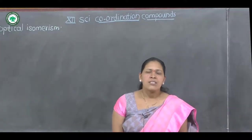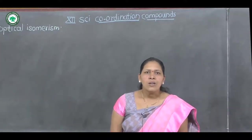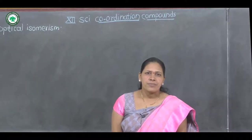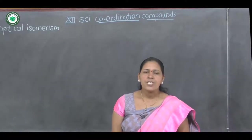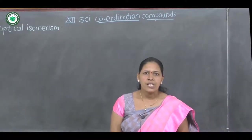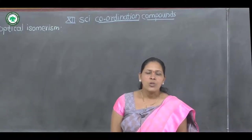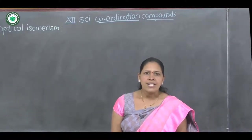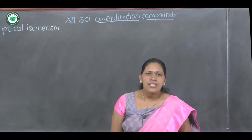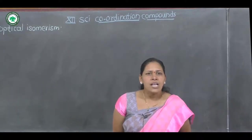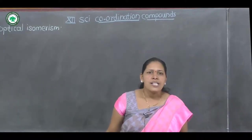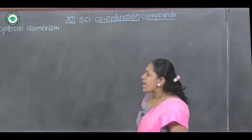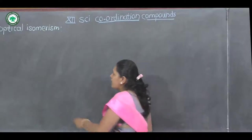The second is the levorotatory isomer, which rotates the plane of polarized light towards the left-hand side or in the anti-clockwise direction. It is called the L-isomer and is represented by small letter 'l'.